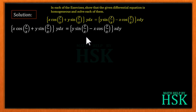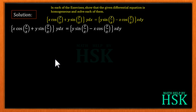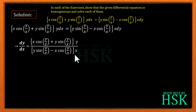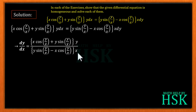To show that the equation is homogeneous, we first calculate the value of dy/dx. We cross-multiply dx and rearrange to get dy/dx equal to: x·cos(y/x) + y·sin(y/x), multiplied by y, over y·sin(y/x) minus x·cos(y/x), multiplied by x.